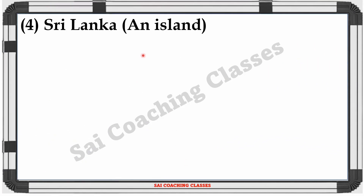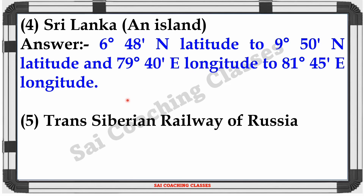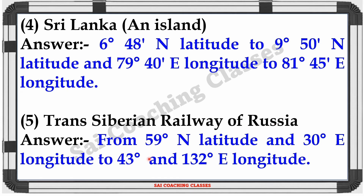Sri Lanka: 6 degree 48 minutes North latitude to 9 degree 50 minutes North latitude, and 79 degree 40 minutes East longitude to 81 degree 45 minutes East longitude. Trans-Siberian Railway of Russia: From 59 degree North latitude and 30 degree East longitude, to 43 degree North latitude and 132 degree East longitude.